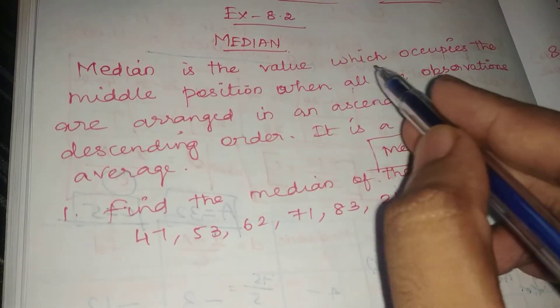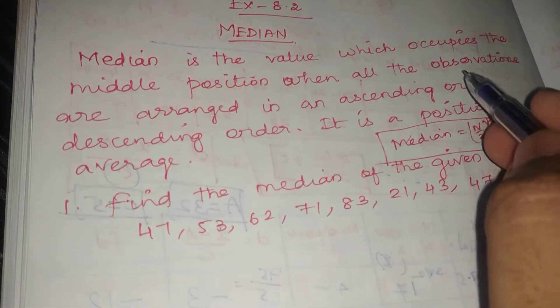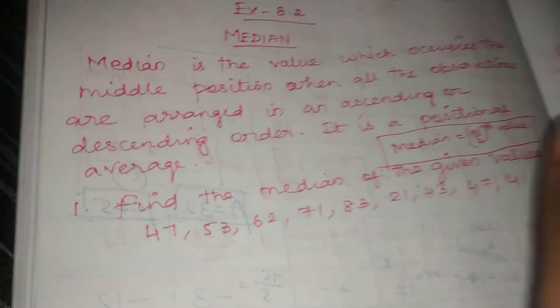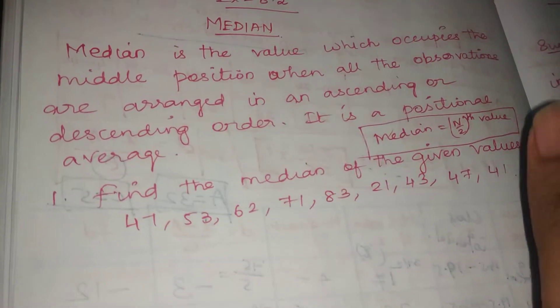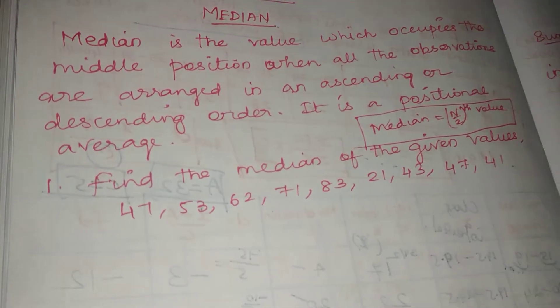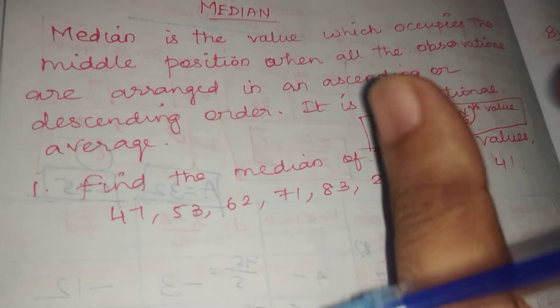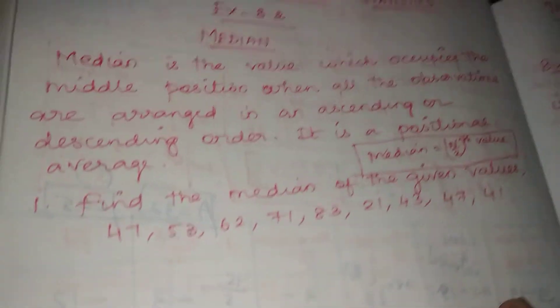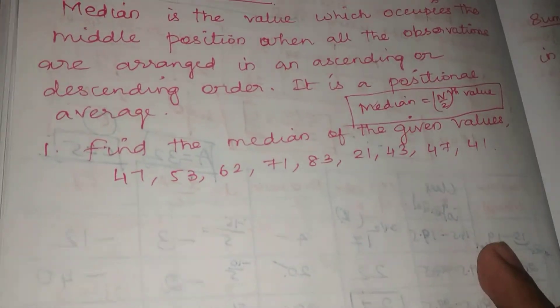Median is the value which occupies the middle position when all observations are arranged in ascending or descending order. When you arrange observations in ascending order, the middle value in that arrangement is the median. It is the positional average.